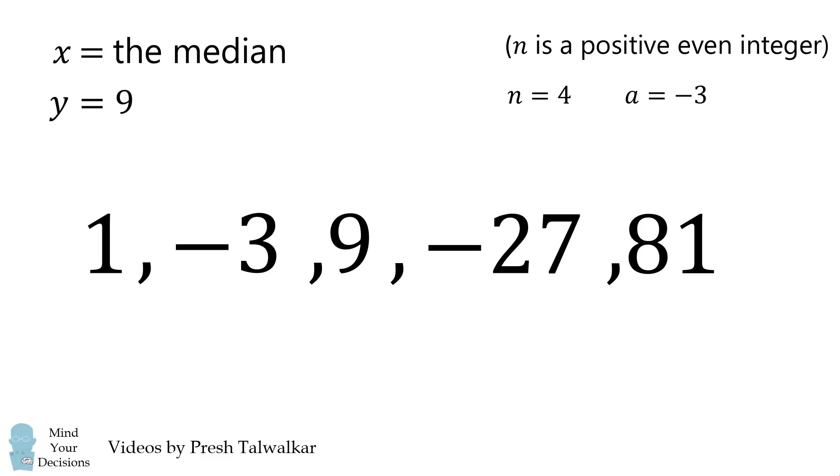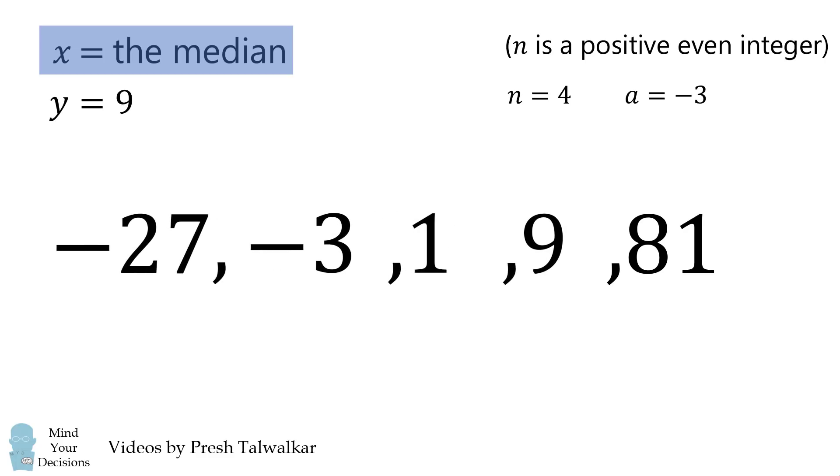y is equal to 9. What's the median value? What's the middle value of this sequence? To calculate the median, we'll arrange the sequence in ascending order. We can now see the middle value is equal to 1 and x is equal to 1. Therefore, x is less than y.